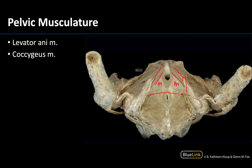The coccygeous muscle is the more posterior, inferior one, located right about here. The coccyx would be located here because we're looking at a straight inferior view, in a lithotomy-type position with the lower limbs spread to get a better view of this region. The levator ani is the majority of the pelvic diaphragm, but the coccygeous muscle looks a little bigger here because some of the levator ani is deep to this perineal membrane region.